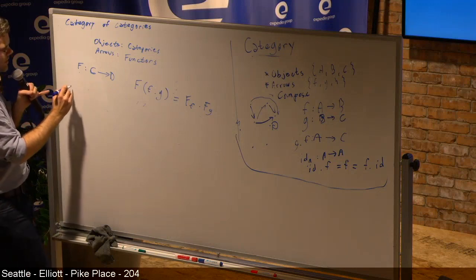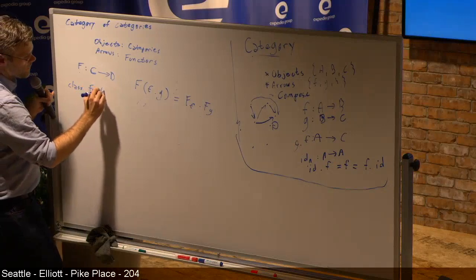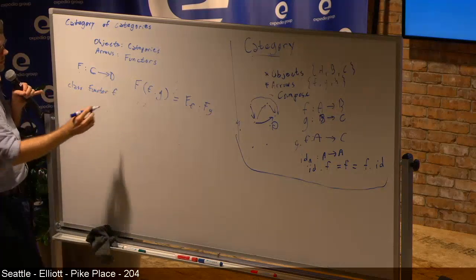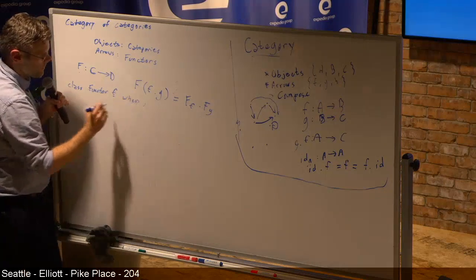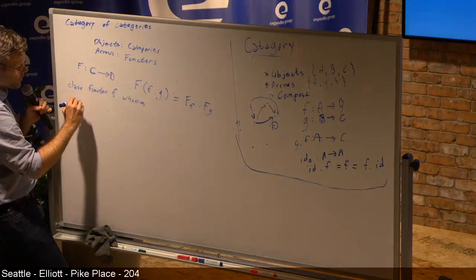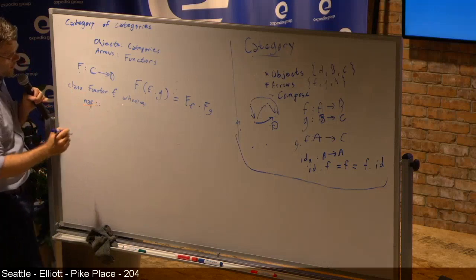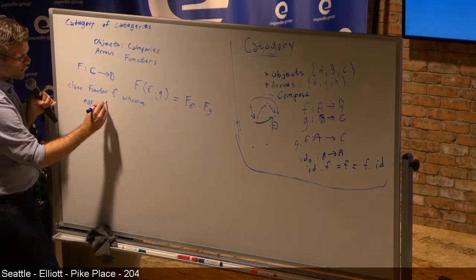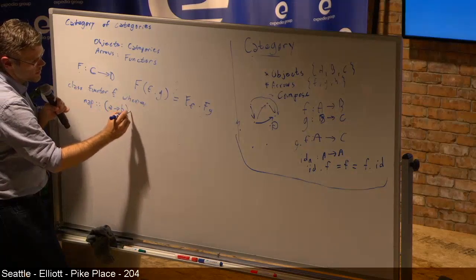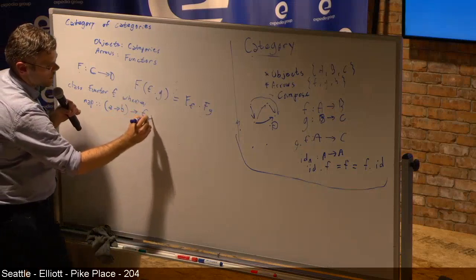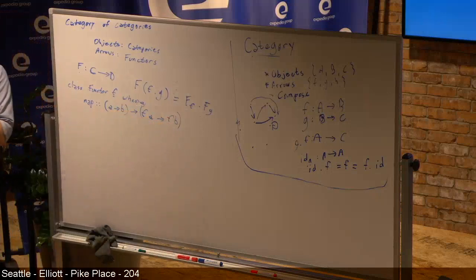These homomorphisms compose just like regular functions, and there's an identity on every monoid which is just the identity function. Not only do we have a category of monoids, we can also come up with a category of categories. The objects in that category are categories, and the arrows are category homomorphisms — which are usually called functors.